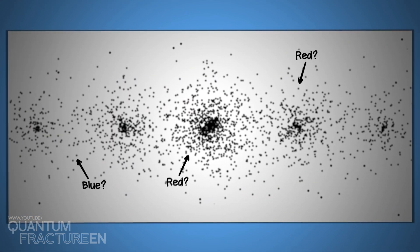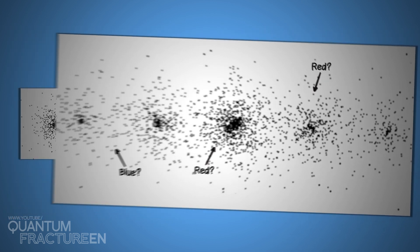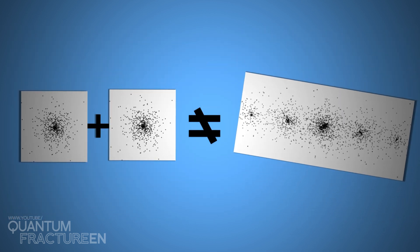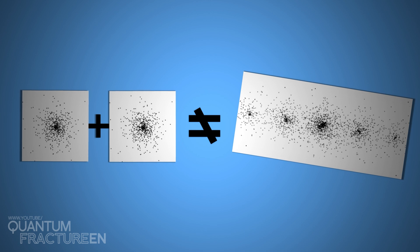But this doesn't happen in experiment number three. Here you can't tell what shot came from which box. And to make matters worse, the sum of the two boxes' patterns does not match the pattern you get when you open both boxes at once.